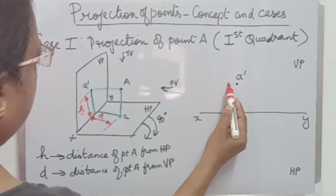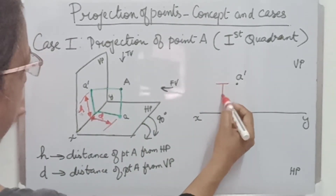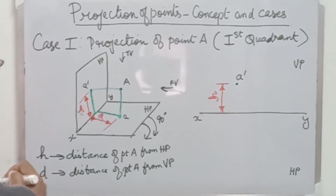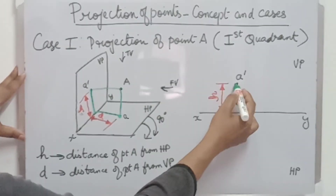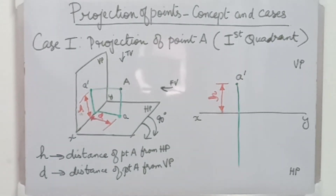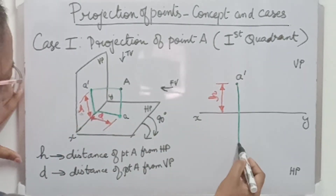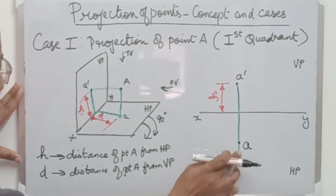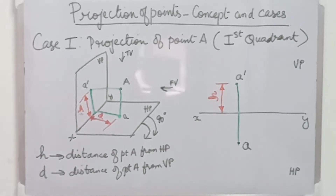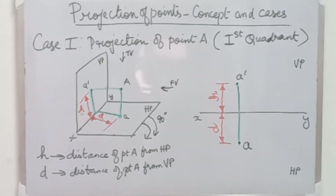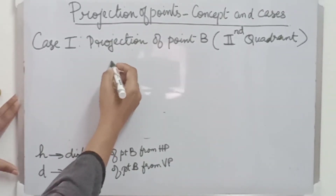A dash is at a distance small letter H from the horizontal plane, that is from the XY line. I am drawing the projector and extending it down — point A will be on the projector, so I am marking point A, that is the top view. The distance from the XY line to A is small letter D. This completes the projection of point A.